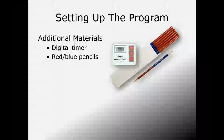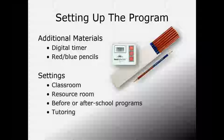Students will need red and blue graphing pencils—also available from Read Naturally or you can use crayons. Blue is for the cold timing, which is the initial first timing. Red is for the hot final timing. Students use these to graph their scores on their record sheets.